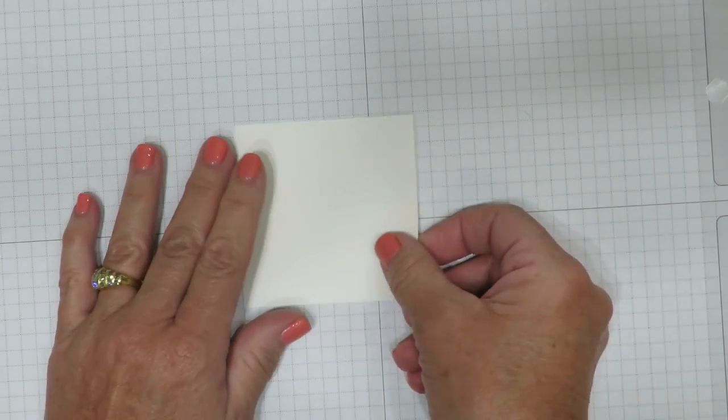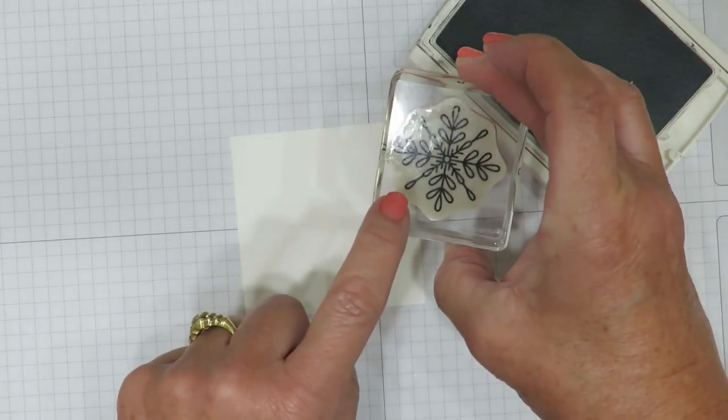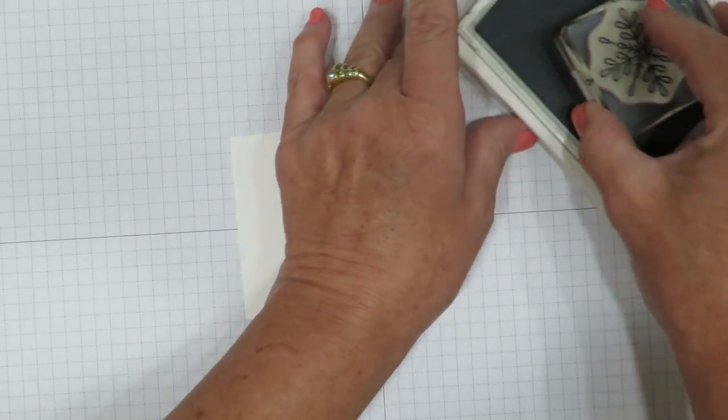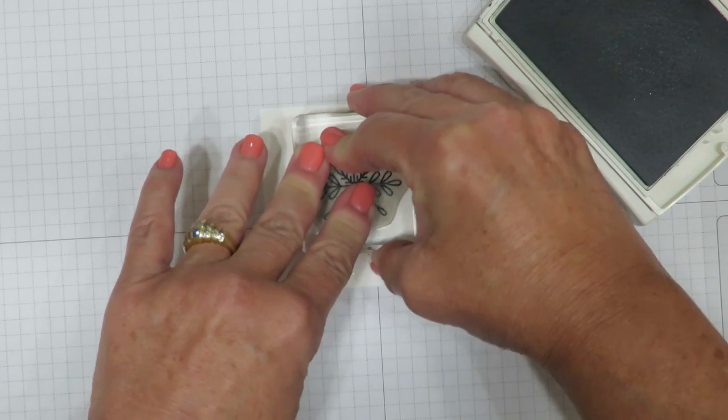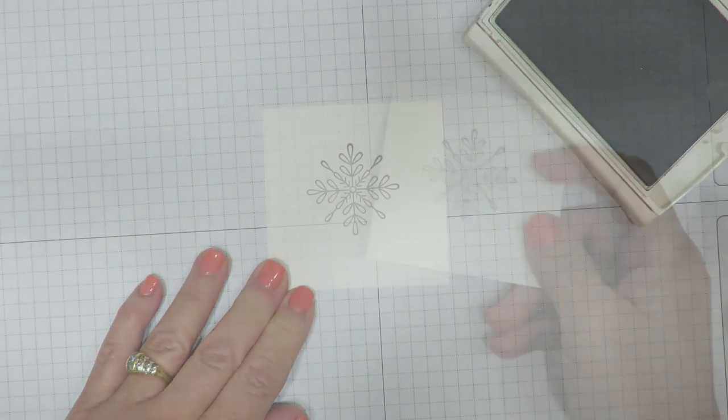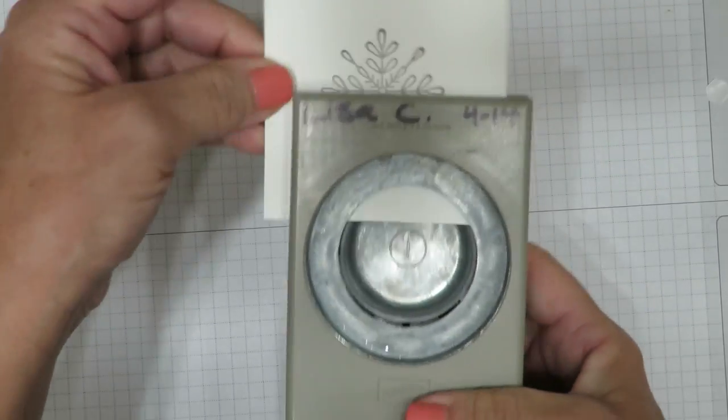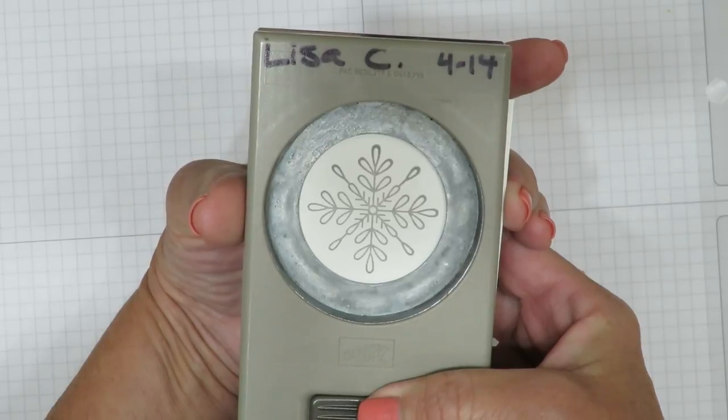Now let's go ahead and do our focal point. I've got a scrap piece of Whisper White cardstock and I'm using the Smoky Slate ink again and I've pulled out that snowflake from that same stamp set, Snowflake Sentiments. I'm going to ink that up and I'm going to stamp that here on my scrap paper. I'm using the one and three quarter inch circle punch to punch out my image because I've already checked and I know that's going to fit inside the hole that we've created.